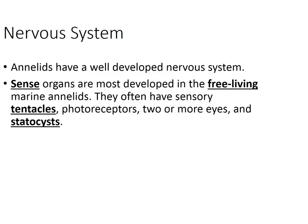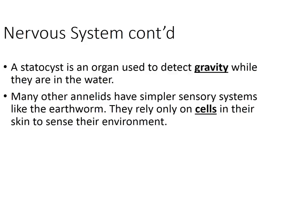The nervous system is pretty well developed. They have sense organs in their front area. Some have sensory tentacles, and they can have photoreceptors to detect light. Some do have eyes, and they have statocysts which help detect gravity so they know if they're up or down — particularly useful in water. Some annelids also have cells in their skin that detect chemicals, touch, or temperature. For example, an earthworm tunneling through dirt doesn't need to see light, so it relies on other sensory cells to help it maneuver and find food.